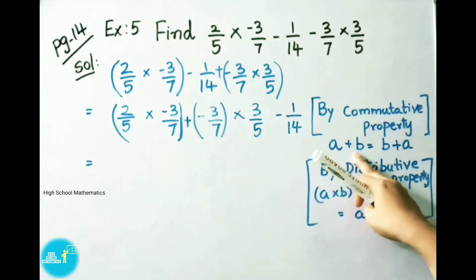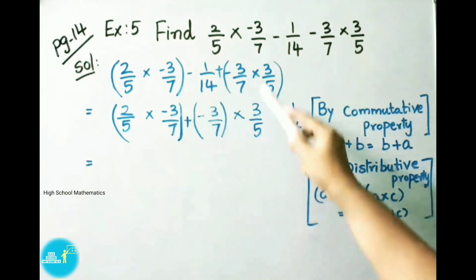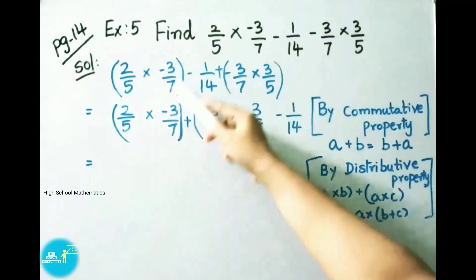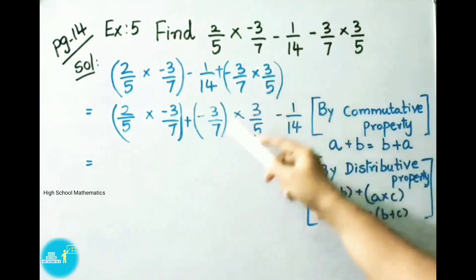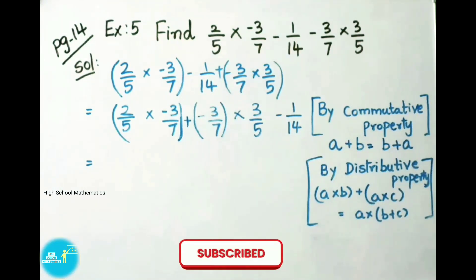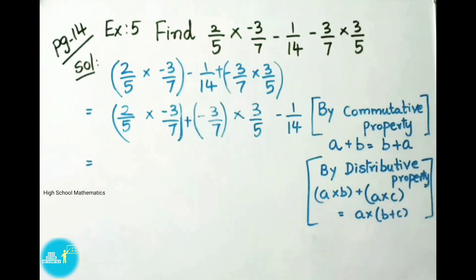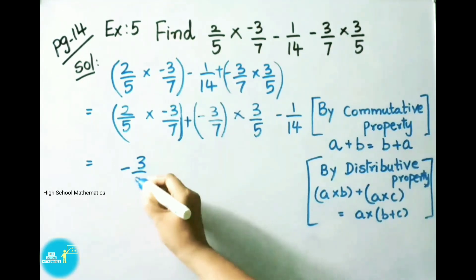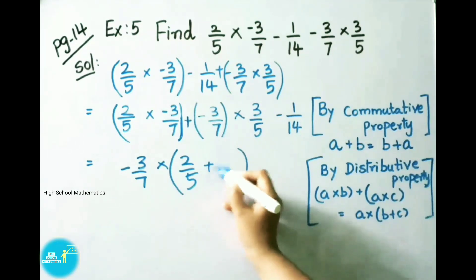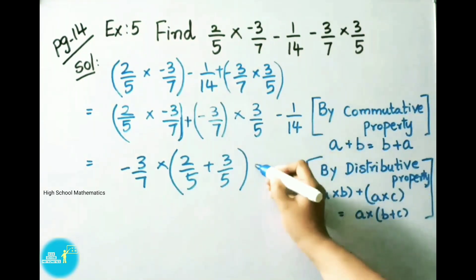Now we can apply commutative property for the last two values. Let us take minus 1 by 14 as a and this value minus 3 by 7 into 3 by 5 as b. By applying commutative property, a plus b is equal to b plus a. So we have written here in the next step minus 3 by 7 into 3 by 5 and this value minus 1 by 14. First value as it is: 2 by 5 into minus 3 by 7, plus we have written a plus b means b plus a, so minus 3 by 7 into 3 by 5 minus 1 by 14.